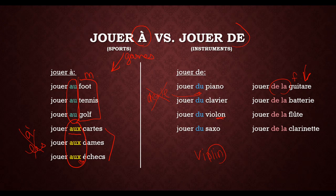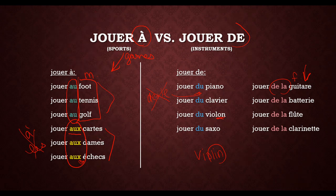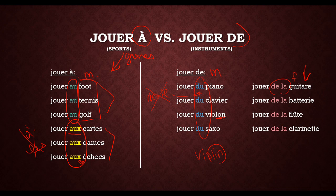So to summarize: when playing a sport or game, it's jouer à. Since all the sports we're learning are masculine, you'll use jouer au; but when there are multiple pieces like checkers or chess, it becomes jouer aux. For musical instruments: if the instrument is masculine, use jouer du; if it's feminine, use jouer de la.